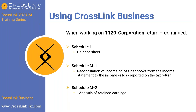Schedule M-2 is another reconciliation concept that tracks the status of income the business has received over time. It accounts for the income you get to keep minus the distributions sent out to the owners. This works together with the balance sheet on Schedule L to create a balanced book.